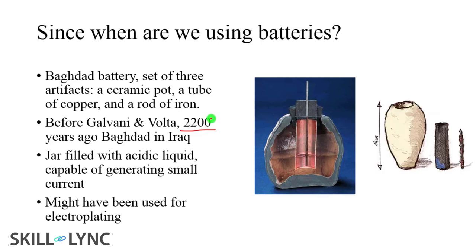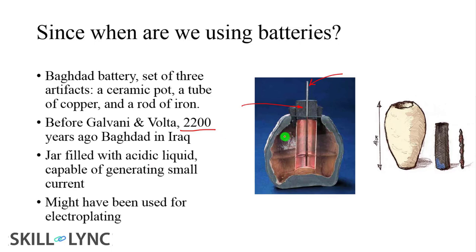The Baghdad battery is approximately 2200 years old and contains three elements: a ceramic pot, a copper tube, and an iron rod. The iron rod serves as one terminal of the battery, and the copper tube serves as the other terminal. With these two terminals, current flows in the external circuit. The ceramic pot acts as a vessel for the acidic liquid kept inside — this is the very first battery in the history of mankind.